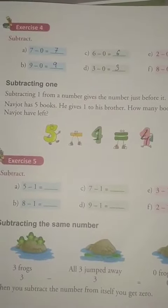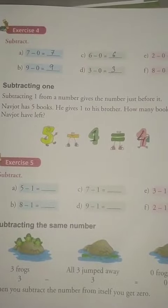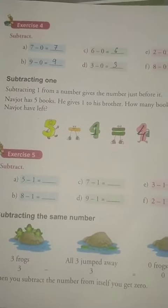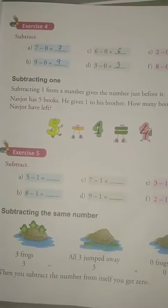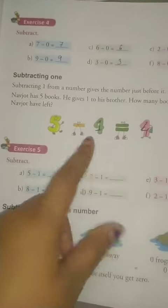So when we subtract 1 from a number, it gives the number just before it. So 5 minus 1 is equal to 4. You just make it correct.